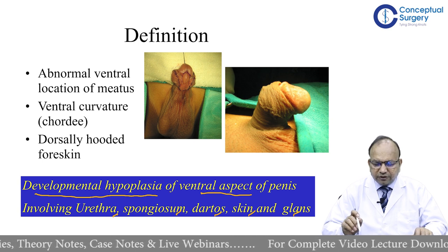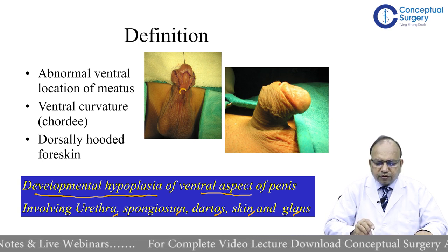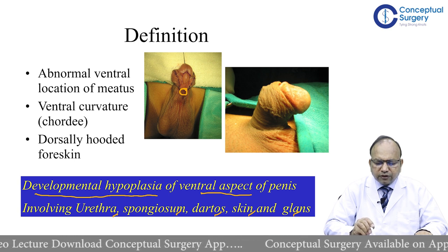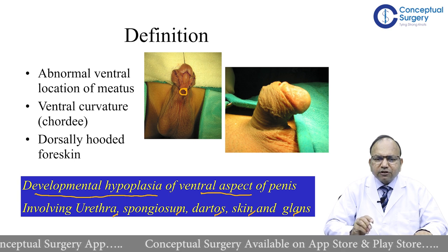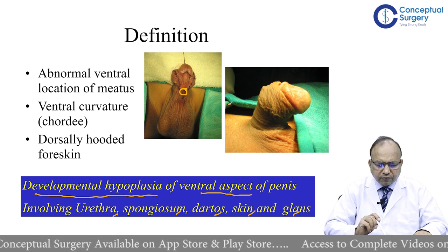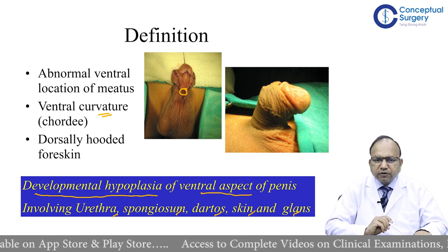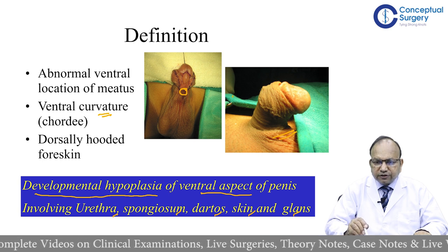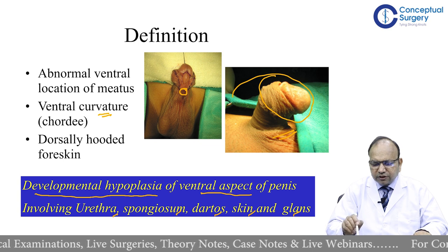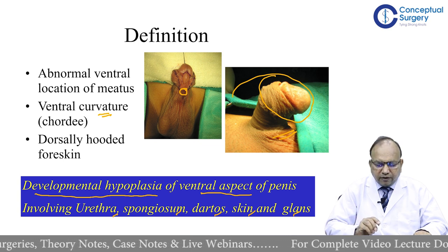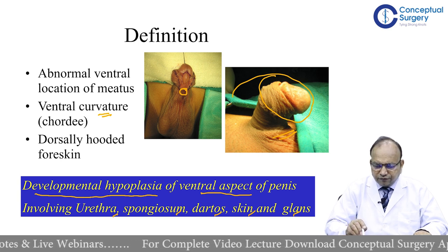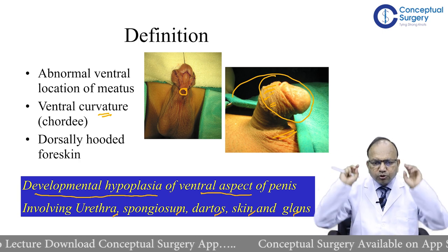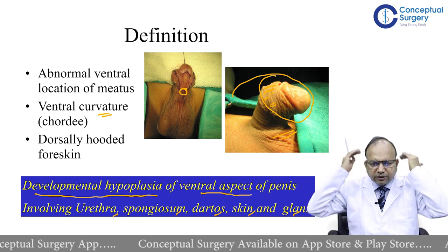The three salient features of hypospadias are: first, an abnormally located meatus — either distally, proximally, or somewhere in the middle on the ventral aspect, but not at the tip of the glans, which is the normal position. Second is ventral curvature, also known as chordee — for example, the glans appears tilted onto the ventral surface of the phallus. Third is a dorsally hooded foreskin, which forms a hood on the dorsal aspect, like a hoodie where the face is exposed but everything else is covered.